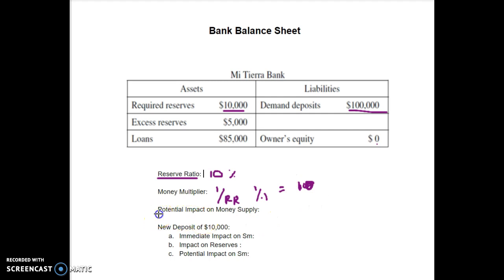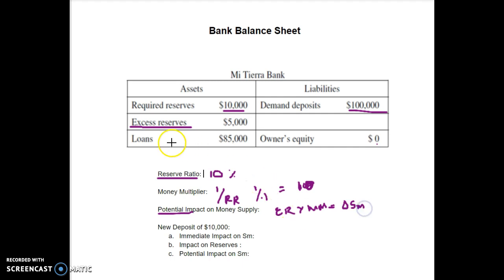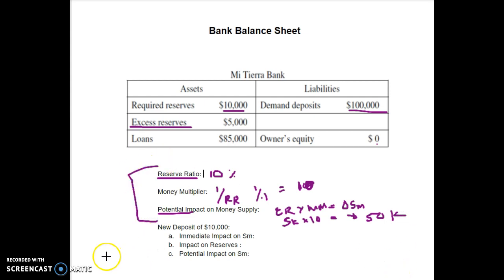How much can this bank potentially impact the money supply? The potential impact is all wrapped up in excess reserves — that's what I can actually lend out, and lending is how we make money. Excess reserves times the money multiplier equals the change in the money supply. Excess reserves are $5,000 and the money multiplier is 10, so the potential change in the money supply is $50,000.